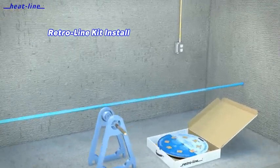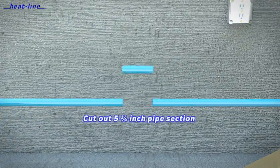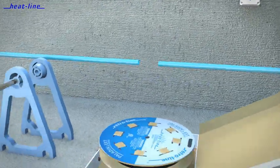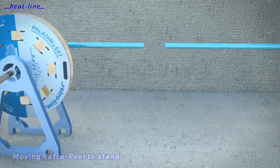Retro-Line Advanced Internal Heat Tracing Systems are designed to be installed in existing water supply pipes without the need for costly excavation.